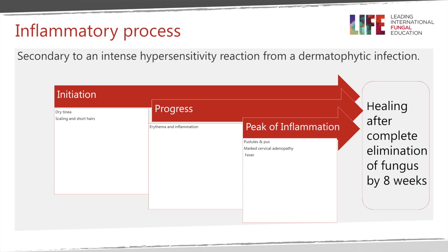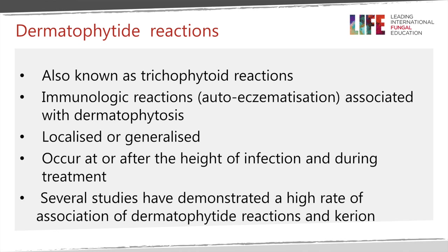The process usually has an initiation phase, a progression, and then a peak of inflammation. At the very beginning you have a dry texture with scaling and short hairs, then a mild form of inflammation with erythema, followed by pustules, pus, and sometimes fever with marked cervical adenopathy. If left untreated it will often lead to complete healing and elimination of the fungus within about two months, though this is very distressing for the patient.